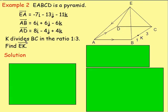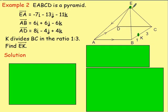We are also told that point K divides BC in the ratio 1 to 3. So on this line going from B to C, K divides it into one part here and three parts here. What we want to do is find the vector EK — going from E all the way down to this point. To do that again, we use alternative vector journeys. There's no vector going directly from E to K, so we can't go there directly.